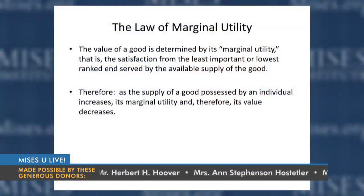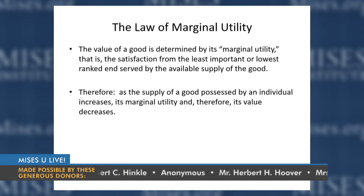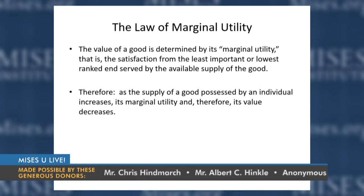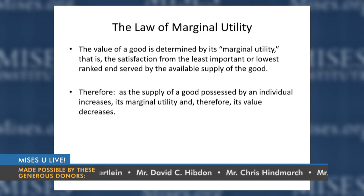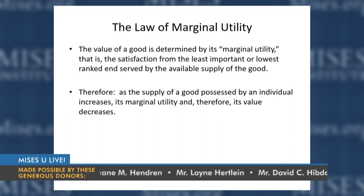The law of marginal utility states: the value of a good is determined by its marginal utility — that is, the satisfaction from the least important, lowest-ranked end served by the available supply of the good. Utility simply means satisfaction; marginal means the relevant unit. As the supply of a good possessed by an individual increases, the value of each individual unit falls. The greater the increase in supply, the lower the marginal utility, and therefore the lower the value.